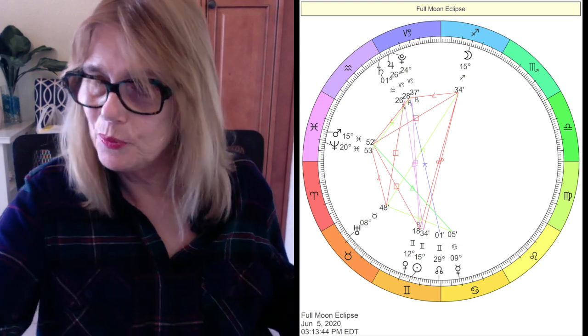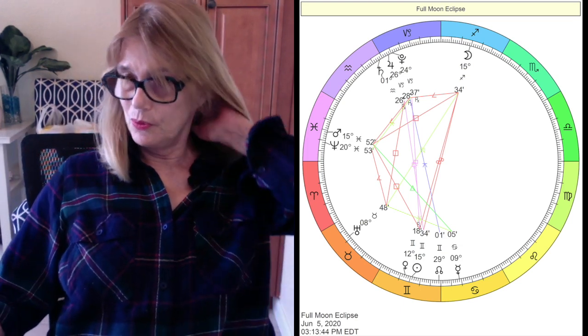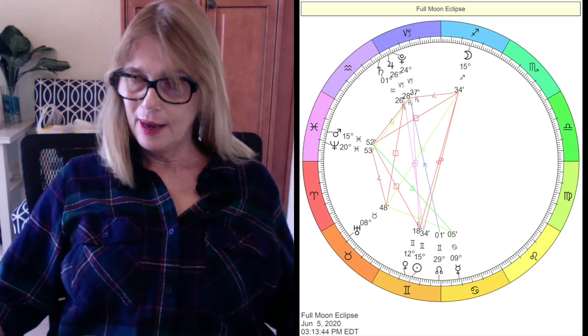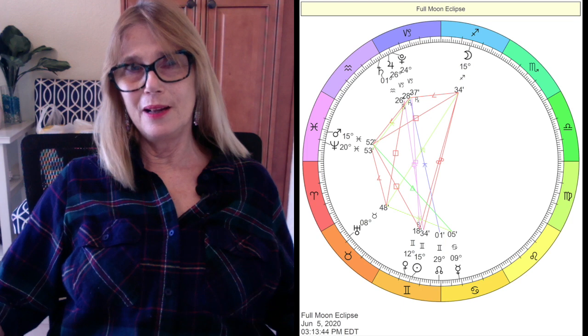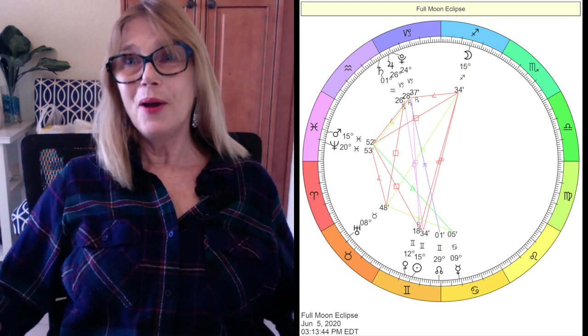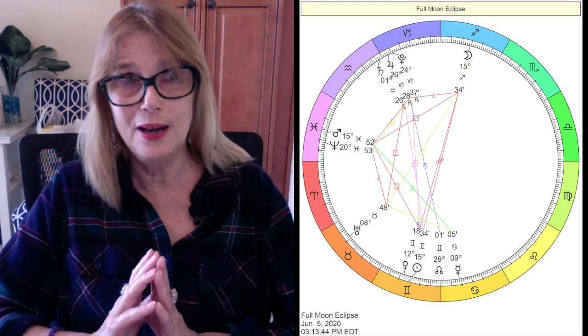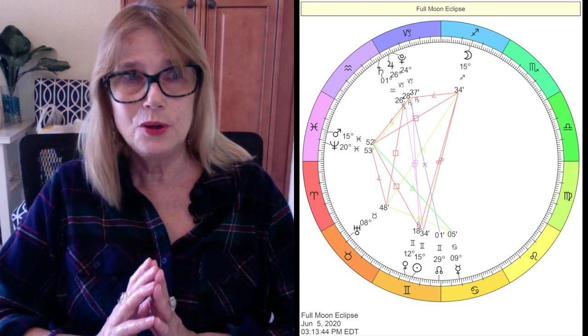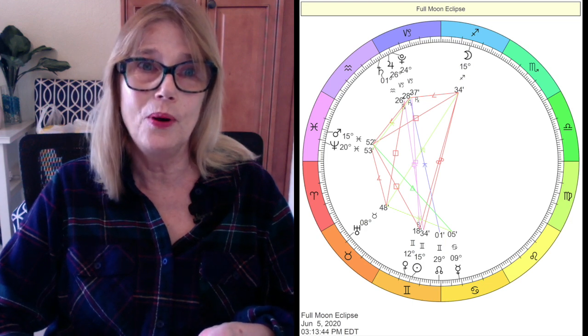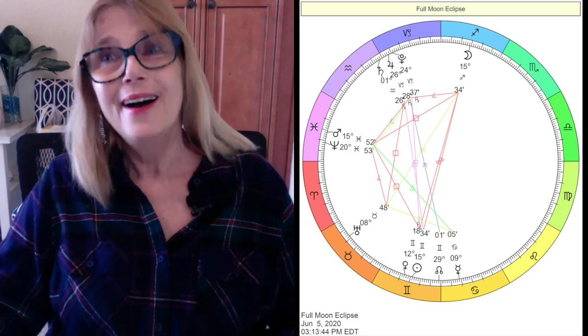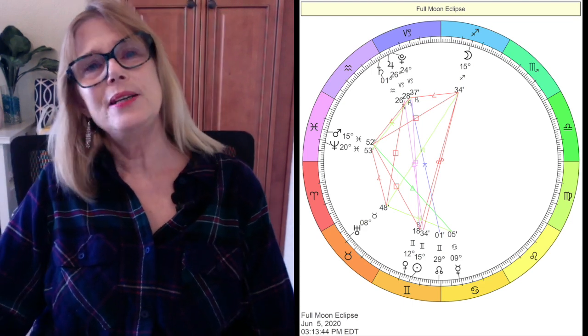Saturn retrograde May 11th through September 29th, and Pluto is retrograde in Capricorn. We're getting a lot of conflicting messages and we'll continue. Unfortunately, Dr. Fauci, as of now, he's on two-week quarantine, which is a good thing because the White House is all COVID-19. And it's like crazy town.